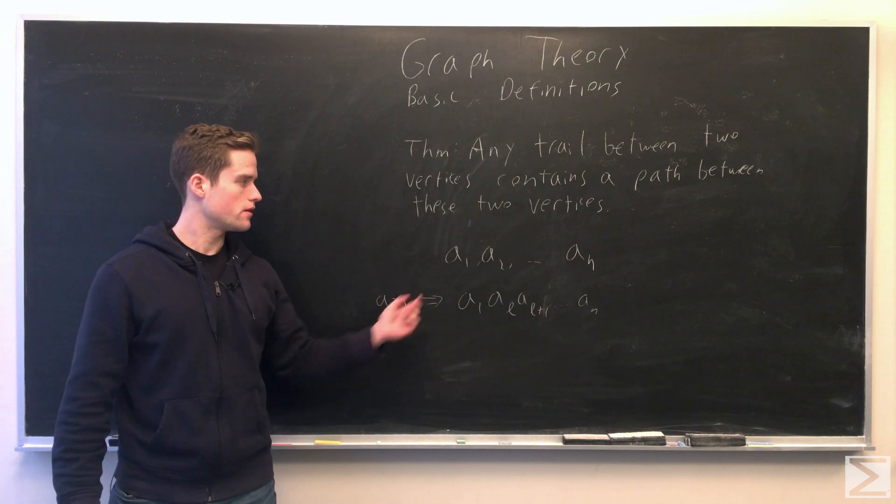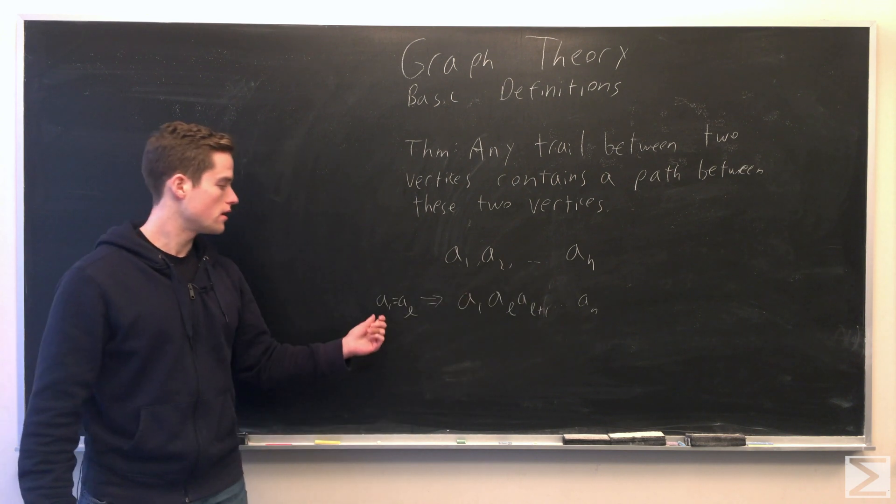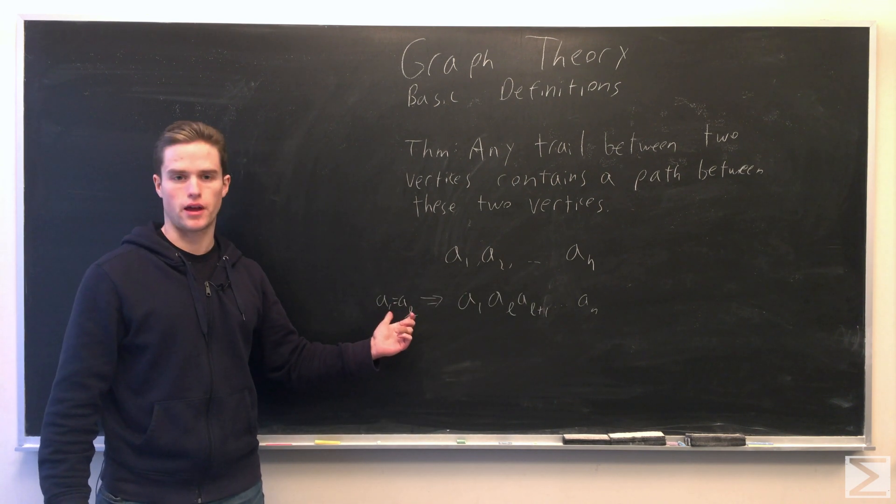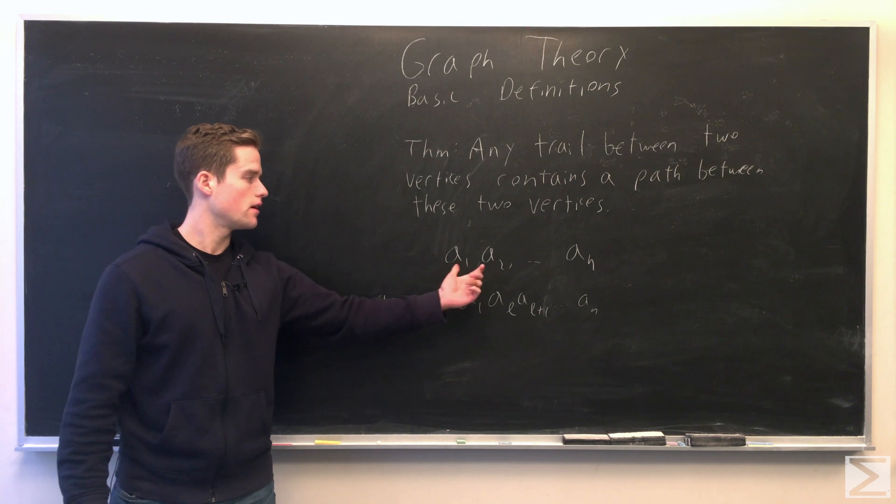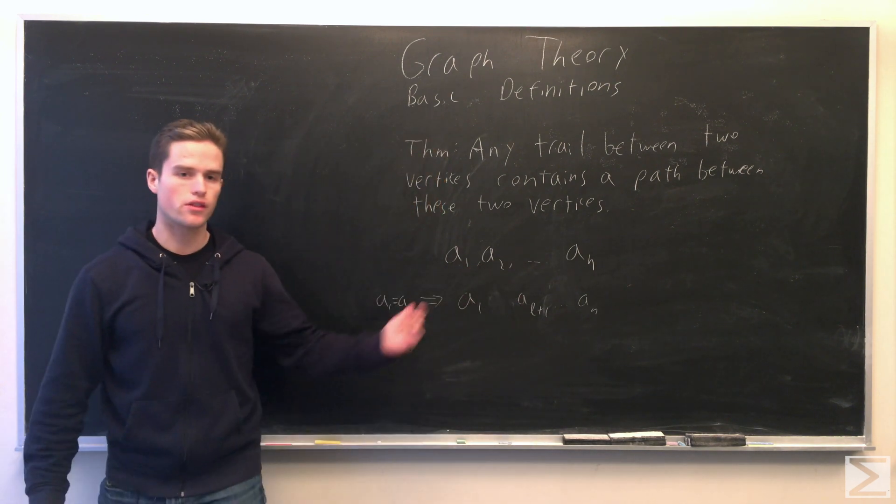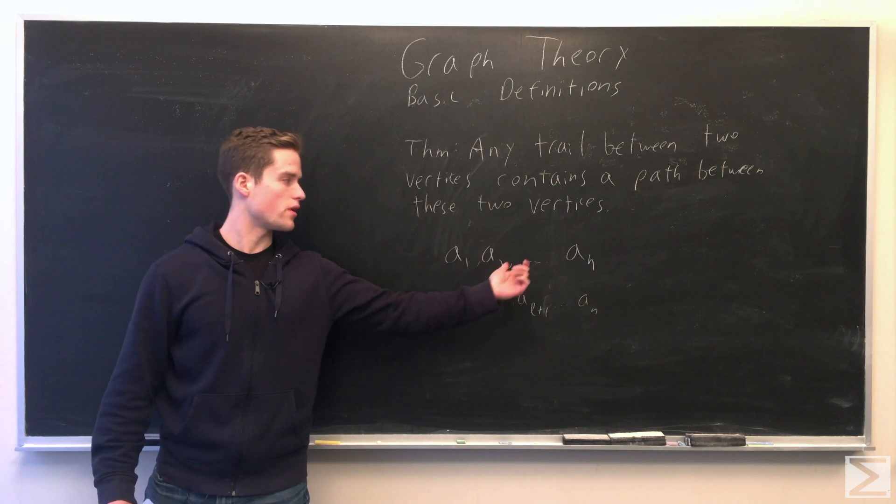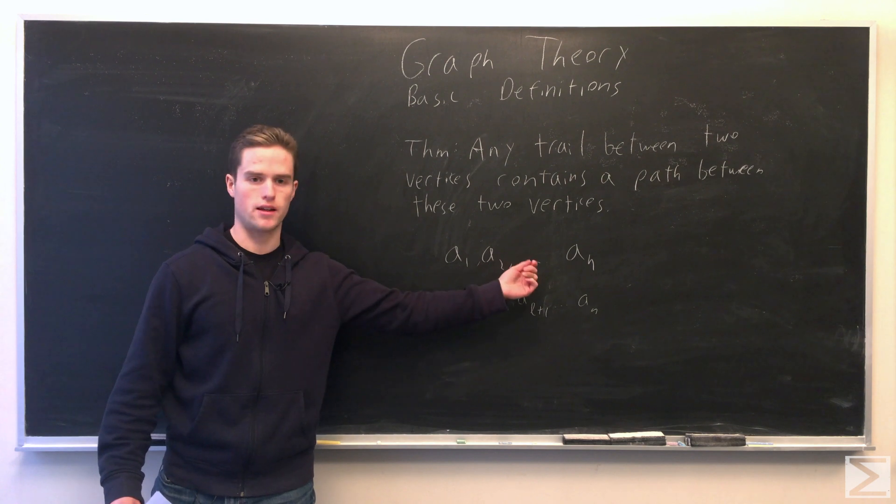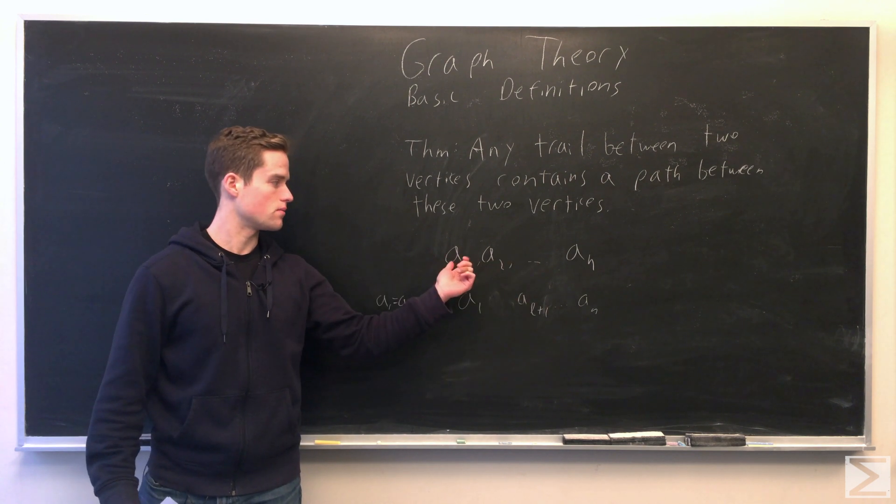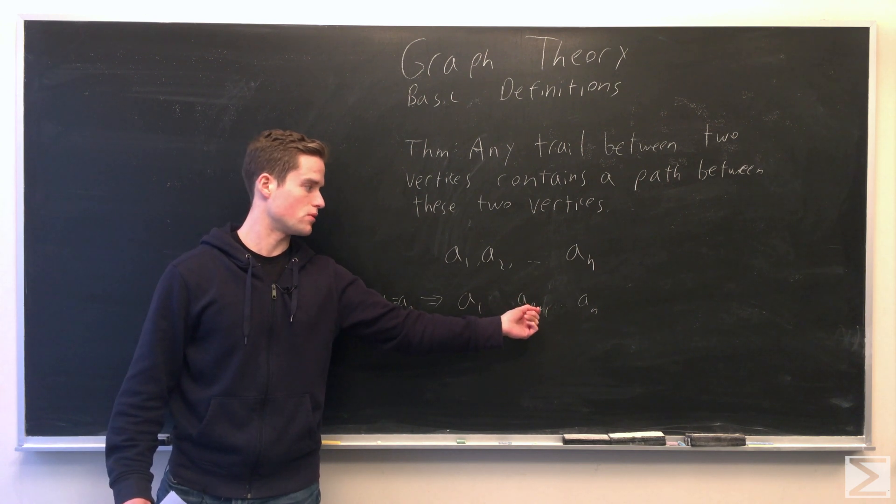If A1, if there's some AL here, that's the last time A1 shows up, then, so AL is equal to A1. Then remove all the vertices between A1 up to AL. So A2 to AL, remove all these vertices. And take as a subsequence, A1, and then the next vertex is AL plus 1.